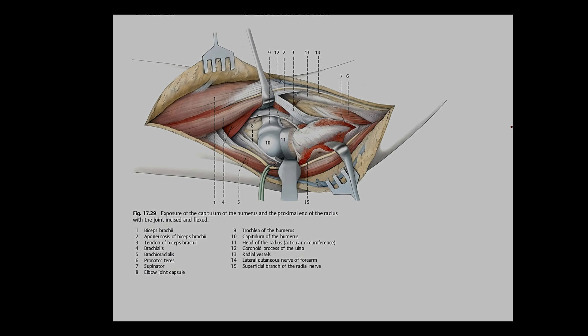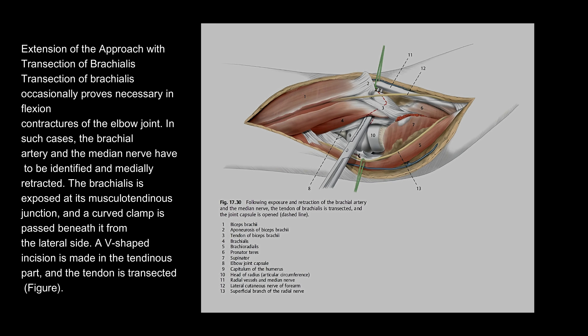Extension of the approach with transection of brachialis: transection of brachialis occasionally proves necessary in flexion contractures of the elbow joint. In such cases, the brachial artery and the median nerve have to be identified and medially retracted. The brachialis is exposed at its musculotendinous junction, a curved clamp is passed beneath it from the lateral side, a V-shaped incision is made in the tendinous part, and the tendon is transected.